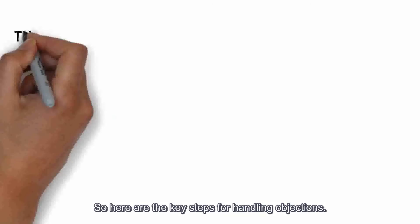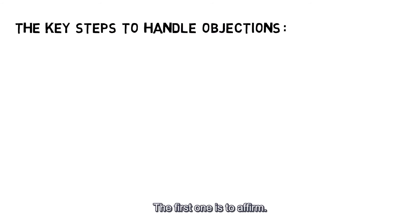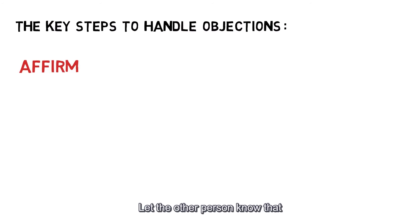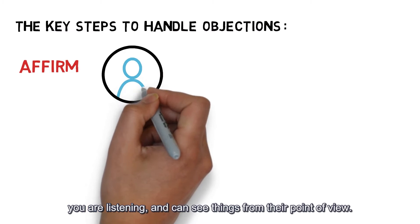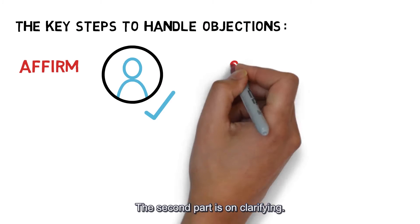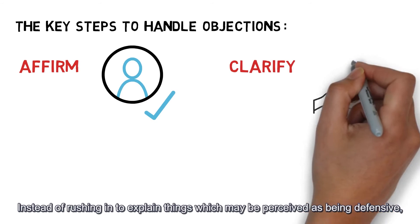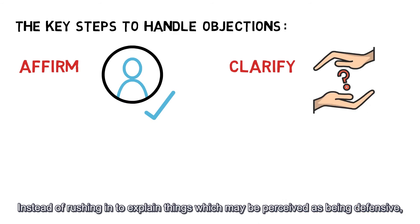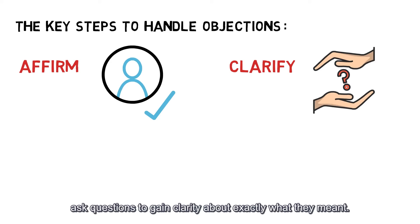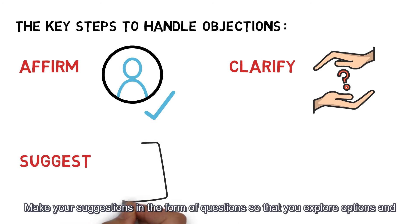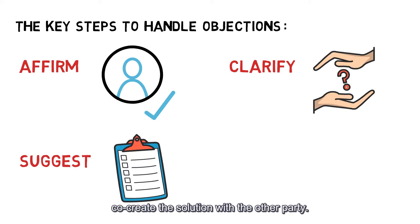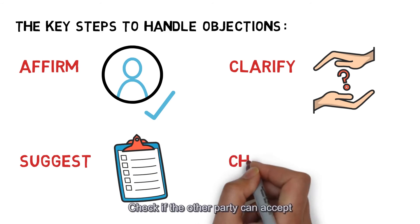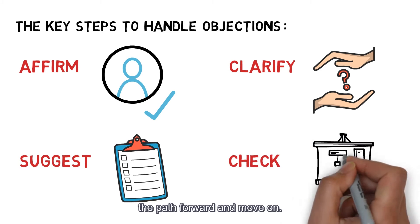So here are the key steps to handling objections. The first one is to affirm, let the other person know that you are listening and can see things from their point of view. The second part is clarifying. Instead of rushing in to explain things which may be perceived as being defensive, ask questions to gain clarity about exactly what they meant. And then suggest. Make your suggestions in the form of questions so that you explore options and co-create the solution with the other party. Finally, check. Check if the other party can accept the path forward and move on.